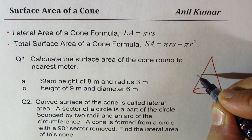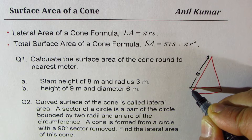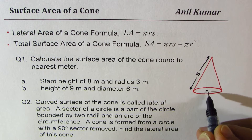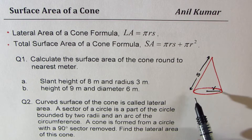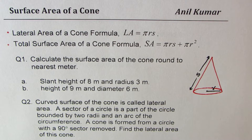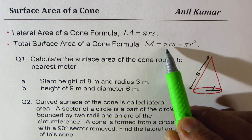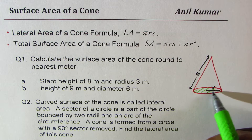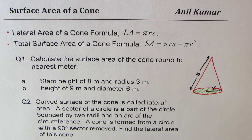If you have a cone whose radius is r and slant height is s, the total surface area is the lateral area — which is the curved surface πrs — plus the bottom circular area πr². That's the circle at the base with radius r.